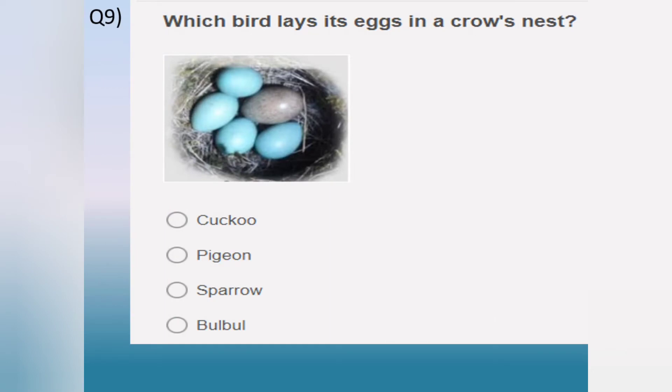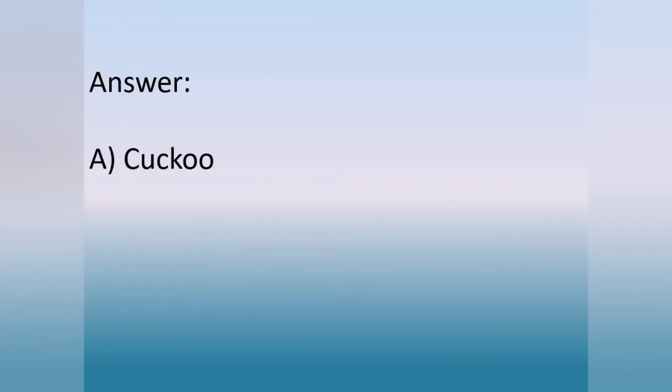Question number 9. Which bird lays its eggs in a crow's nest? Option A. Cuckoo. Option B. Pigeon. Option C. Sparrow. Option D. Bulbul. The answer is option A, cuckoo.